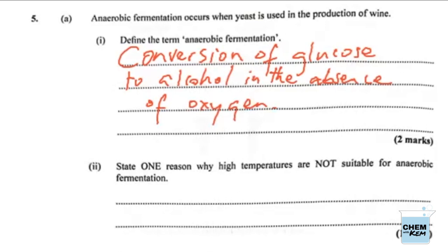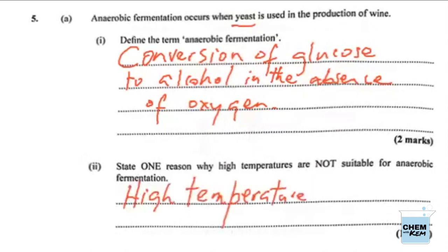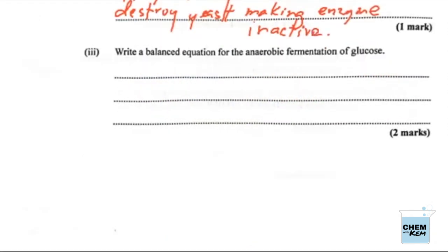And they said here that when yeast is used — so when they ask us why high temperatures are not suitable for anaerobic fermentation in part 2, we have to bear in mind that yeast contains enzymes, and high temperatures would actually destroy the enzyme in yeast — that would cause them to become denatured. So if you say high temperatures will kill or destroy the enzyme in yeast, then that will give you the marks. The high temperatures destroy the yeast, making the enzyme inactive.